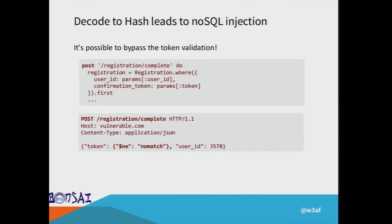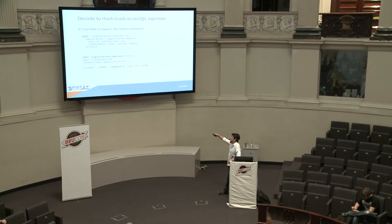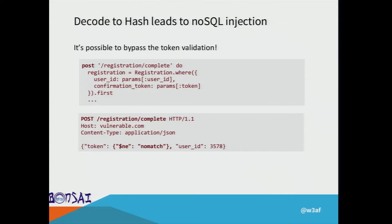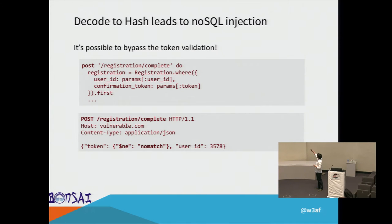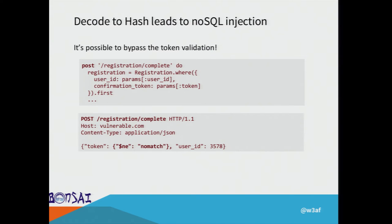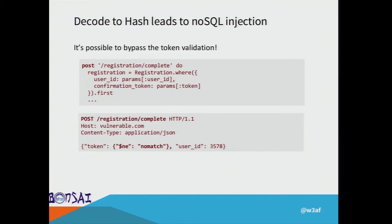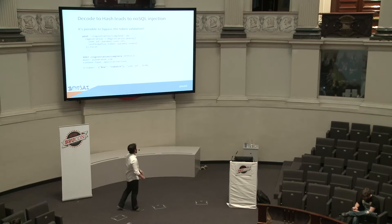The developer was not expecting to receive a hash there. So what happens is that an attacker is able to complete the registration without knowing the token. That's a specific case of a NoSQL injection, which is possible because of this aggressive input decoding behavior.